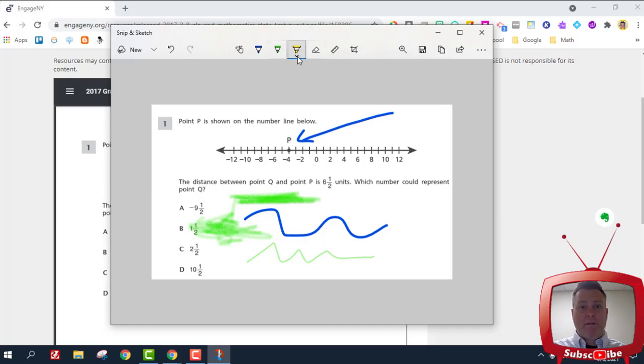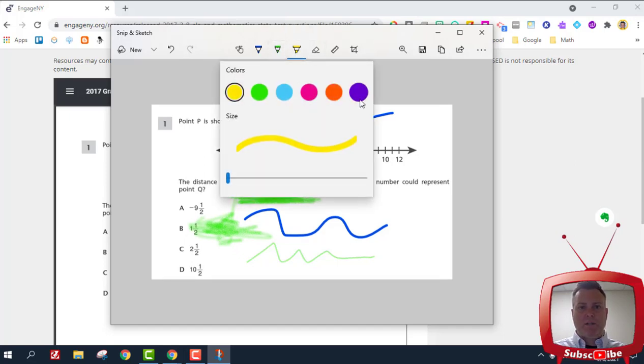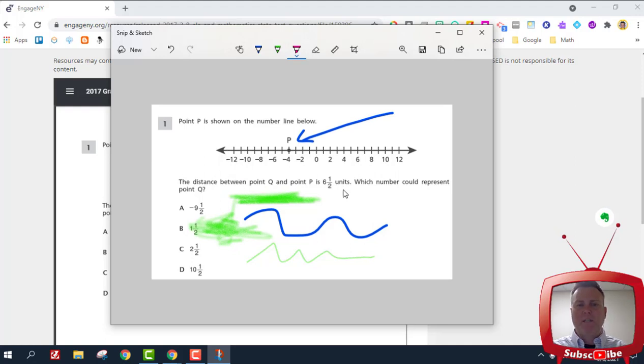To the right of that is the highlighter tool and we have six colors available. We're also able to change the size of the highlight up to 64 thickness, which is excellent. It gives us a big broad spectrum in which to color. If I wanted to make sure my students saw the points and the units, I could highlight those areas.